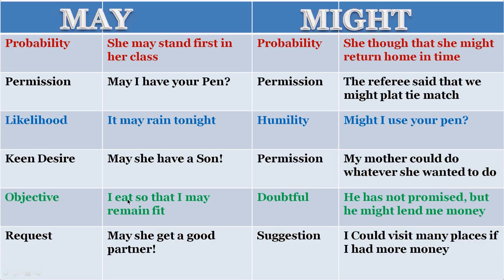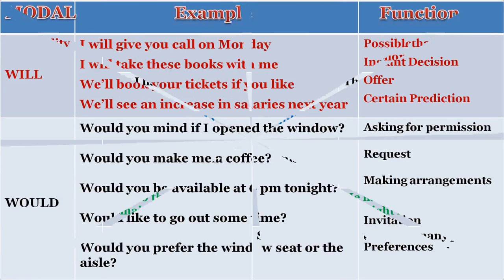For objective: 'I eat so that I may remain fit.' For something doubtful: 'He has not promised, but he might lend me money.' For a wish or request: 'May she get a good partner.' For suggestion: 'I might visit many places if I had more money' — same as 'I could visit many places if I had more money.' So could and might in many cases have overlapping uses.